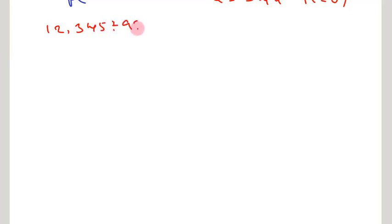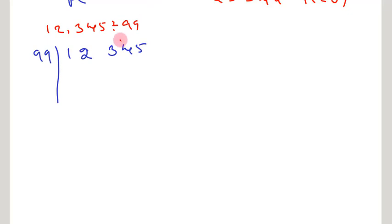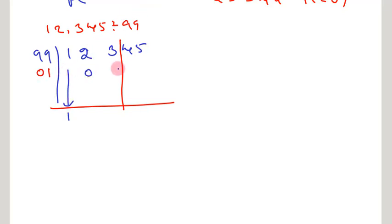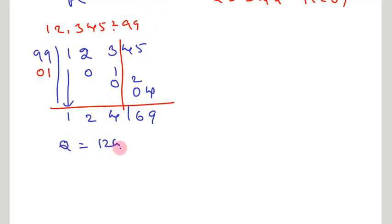The seventh problem is 12,345 divided by 99. Separating our dividend by taking a straight line after the 10s place, and writing Nikhilam as 0, 1. Bring down the leftmost digit, that is 1. 1 into Nikhilam is 0, 1. Adding, you get 2. 2 into Nikhilam is 0, 2. Adding, you get 4. Then 4 into Nikhilam is 0, 4. Adding all, you get 69. So you get a quotient of 124 and remainder is 69.